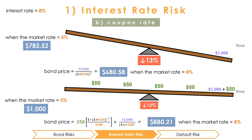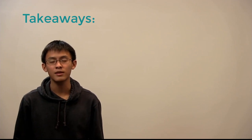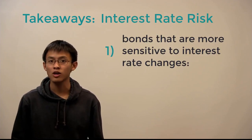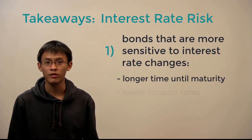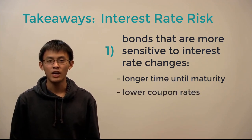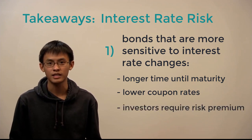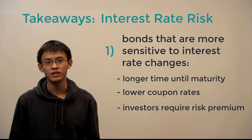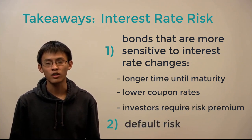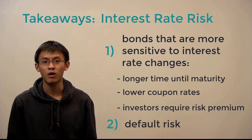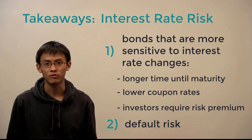Thus bonds with lower coupons and longer terms are more sensitive to interest rate changes. In other words, these bonds must offer a higher return to investors to compensate them for taking on this increased interest rate risk. Today we learned about how all bonds are susceptible to interest rate risk, although bonds with longer terms and lower coupon rates are more sensitive. Investors expect to be compensated for this added risk in the form of higher interest rates. Make sure to watch the next video in this two-part series where we will go over the other type of risk that can affect bond returns — known as default risk.